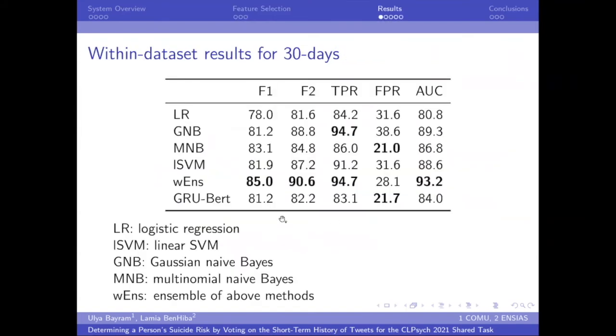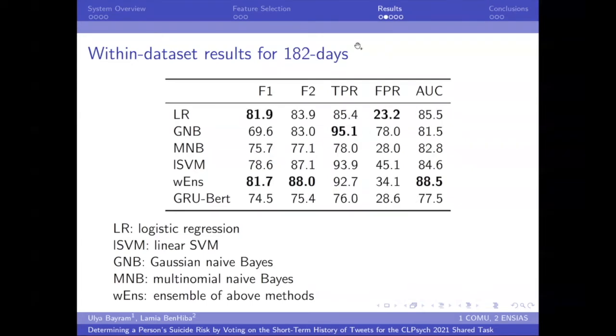So here are the best results. And among the best results, we see that ensemble method is the best among the best for the 30 days dataset. Meanwhile, the deep learning method GRU-BERT is not as good as the other approaches for this within dataset classification. For the longer spanning dataset, ensemble method is also, again, good. Meanwhile GRU-BERT is the worst among them.